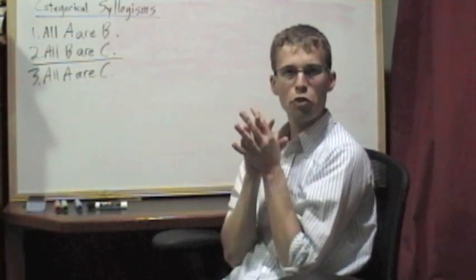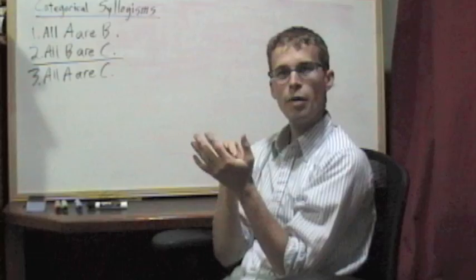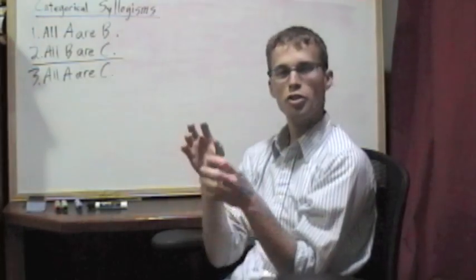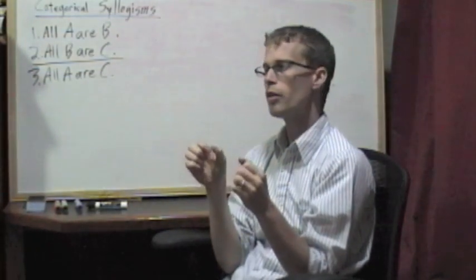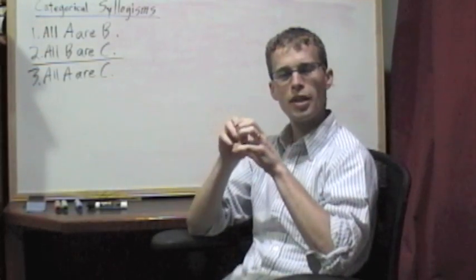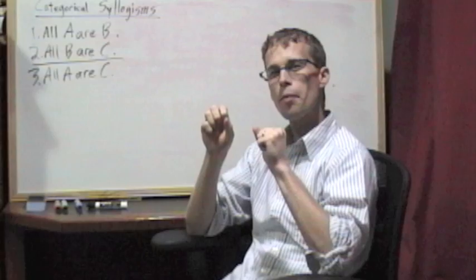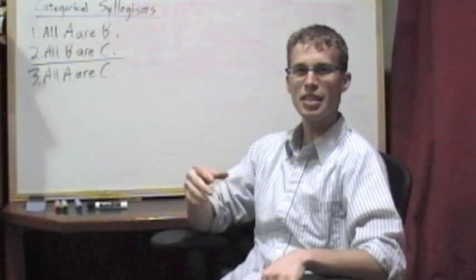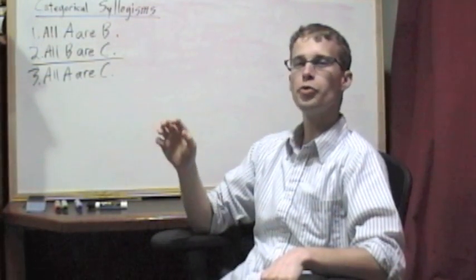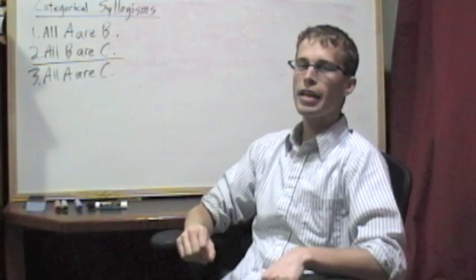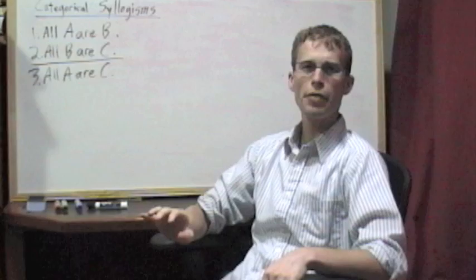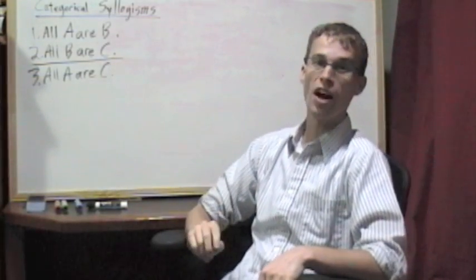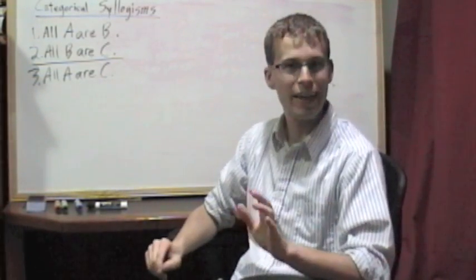So what you're going to do when you use a Venn diagram to represent the argument is you diagram the premises. Remember, diagramming a claim means representing it as if it were true. So what you're doing is you're pretending that the premises are true. Then what you do is you read off of the diagram whether the conclusion can be false. If the conclusion can't be false when you diagram the premises as true, it's just impossible, then you know that it's a valid argument. However, if there's even one possible way for the conclusion to be false while the premises are true, then you know that it's going to be an invalid argument. So let's take a look at that in action.